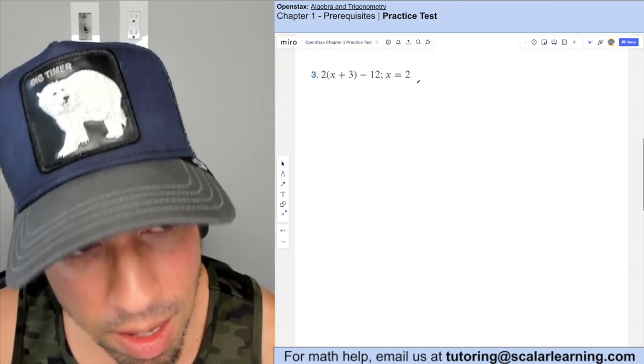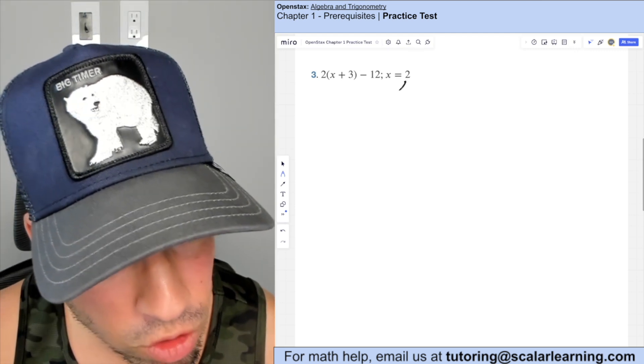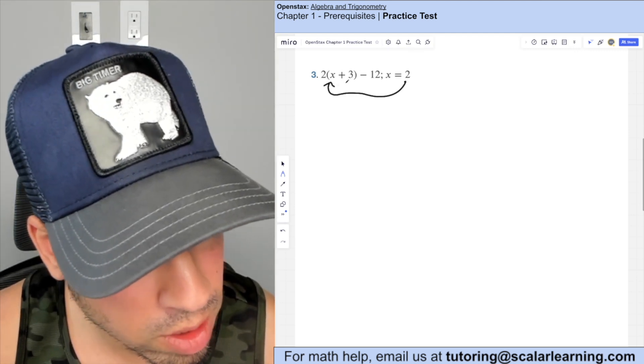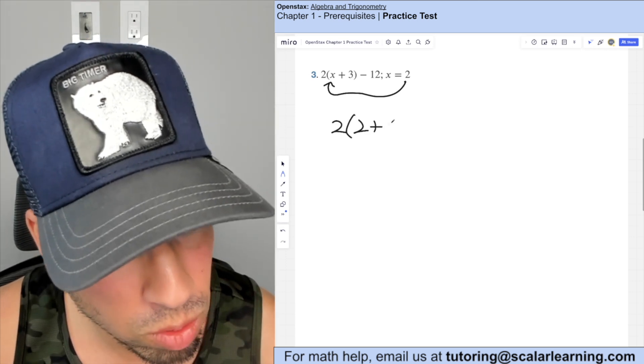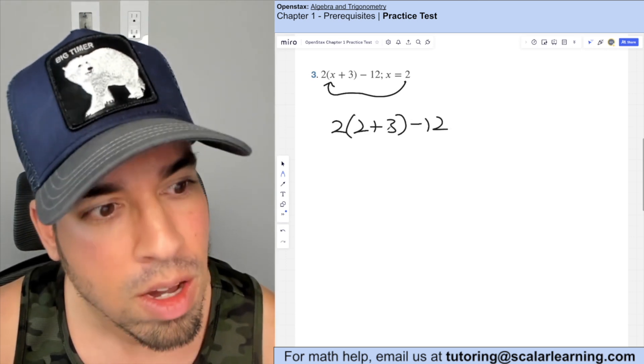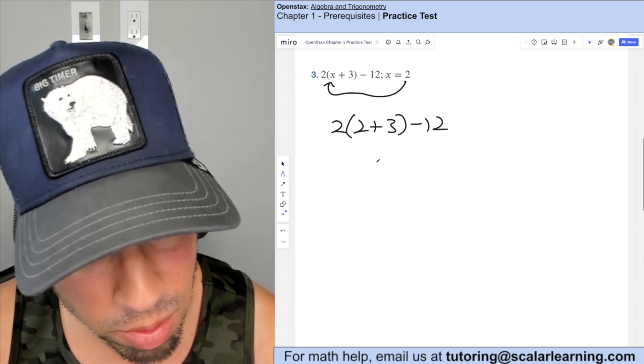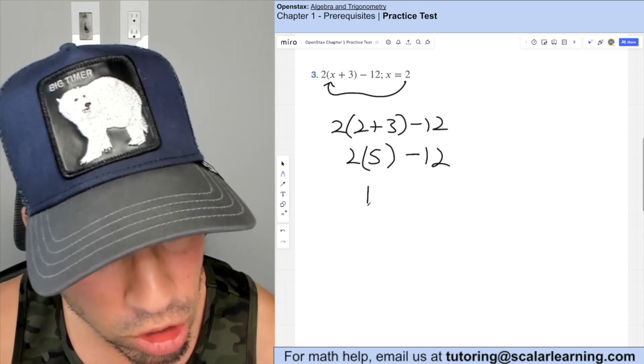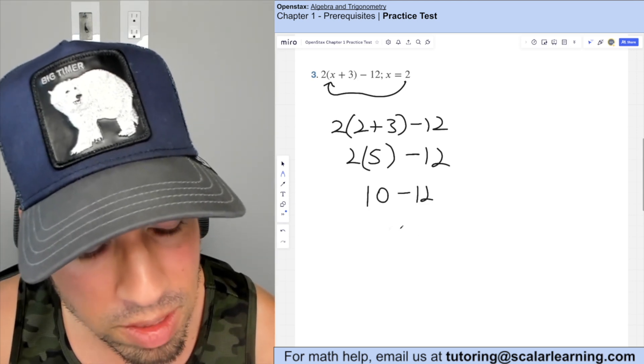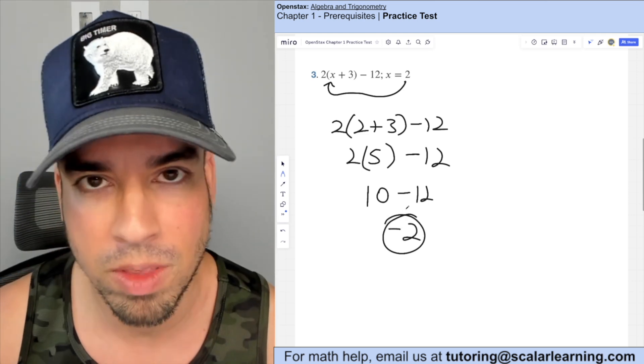Here we're meant to evaluate the expression by plugging two in for x. So that semicolon kind of breaks it up. So I'm just going to replace the x with a two like so. And then I'm going to go order of operations. Two plus three in parentheses first is five. Two times five minus 12. Two times five next, which is 10 minus 12 is negative two. Boom, done.